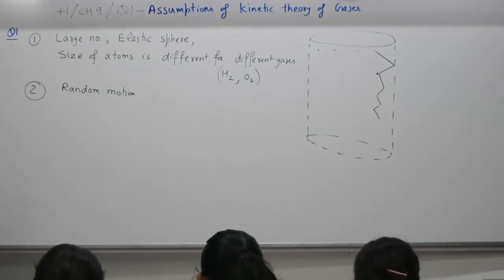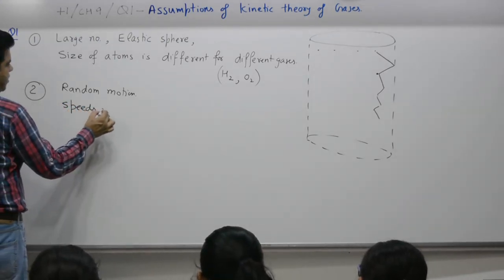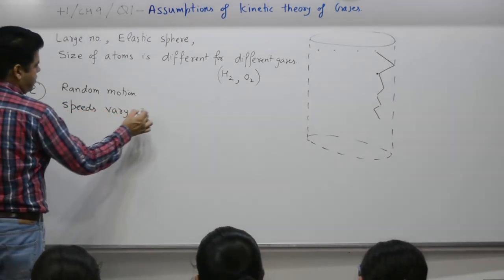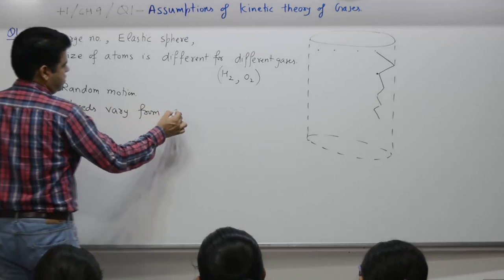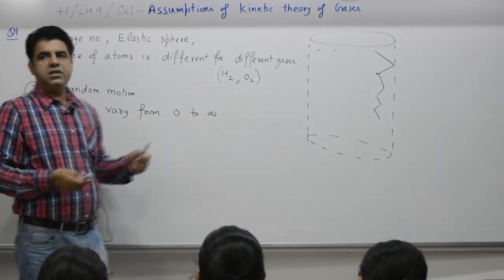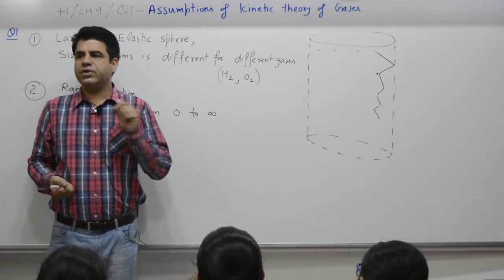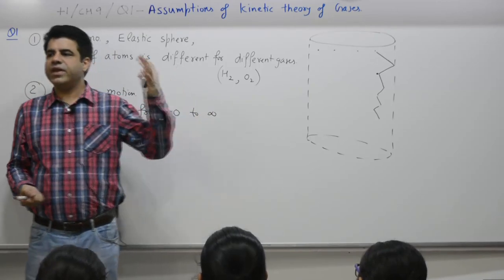Speeds vary from 0 to infinity, the theoretical limits. 0 means when the atom is in contact with the wall, speed is momentarily 0. Infinity means speed can be very high.